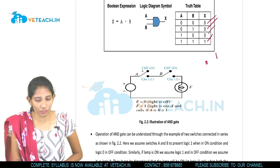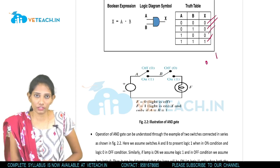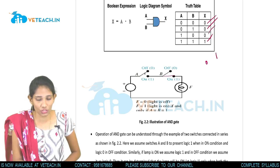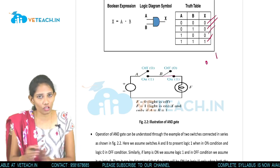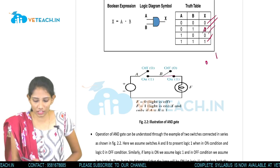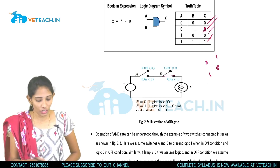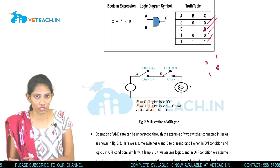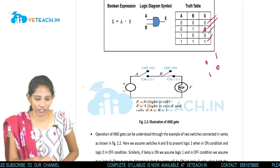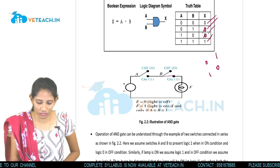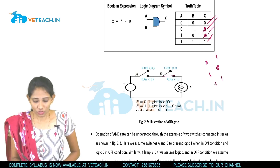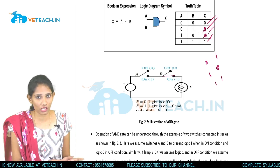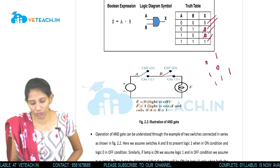For 0,0: both switches are open, so the signal does not pass — output is zero. For 0,1: switch A is open so the signal is cut even though switch B is on — output is zero. For 1,0: switch A is on but switch B is open so signal does not reach the output — zero. For 1,1: both switches are short-circuited so the signal passes directly to the output — high voltage, output is one.